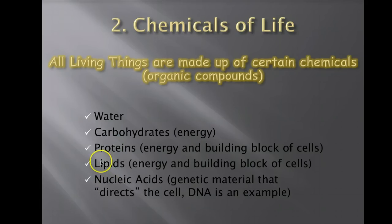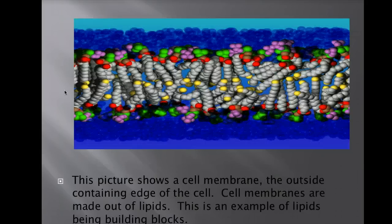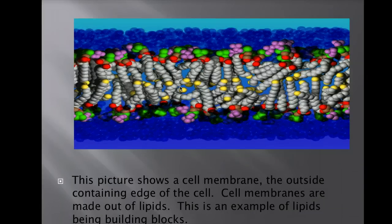Lipids are like fat cells; proteins are used for energy and building of muscle; and nucleic acids help create DNA. This is an example of a cell membrane that shows lipids used as the building block of the cell membrane. When we get to the cells unit, you'll see that the cell membrane is what borders every single cell.